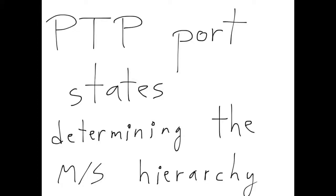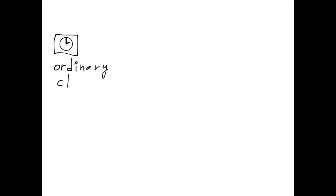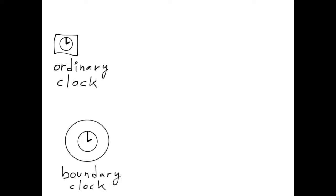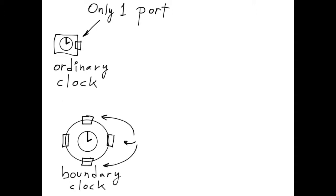Let's talk about the PTP port states that determine the master-slave hierarchy. As we know, we have ordinary clocks and boundary clocks. To connect clocks with each other, ports are used. Ordinary clocks always have a single port. Boundary clocks, on the other hand, can have multiple ports.